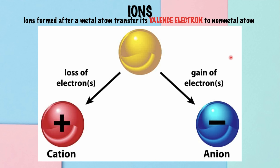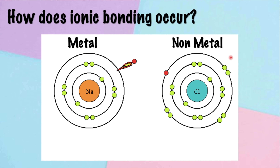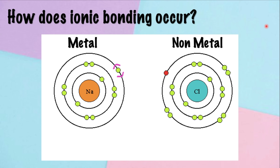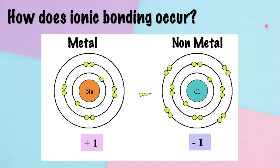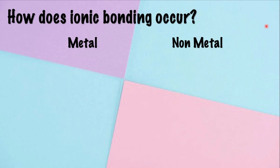Ionic bonding happens between a metal and non-metal element. If there is a complete transfer and gaining of electrons, ionic bonding occurs. One example is sodium chloride, wherein sodium is the metal and chlorine is the non-metal.